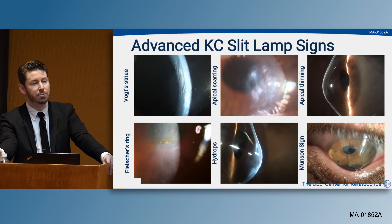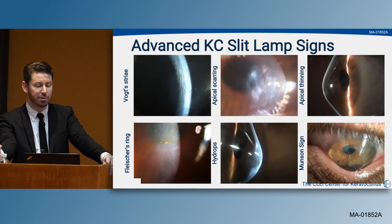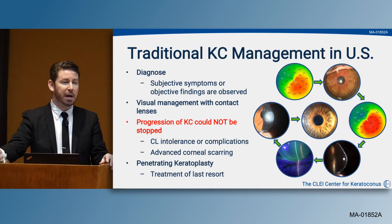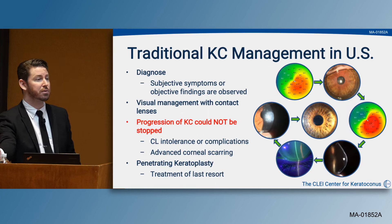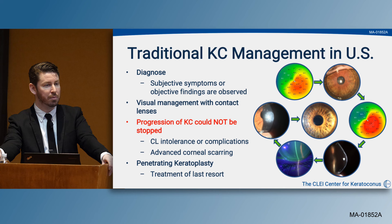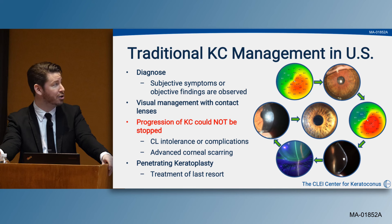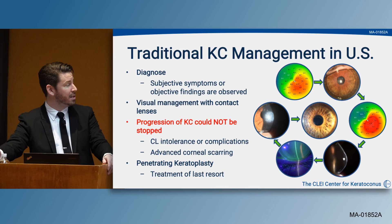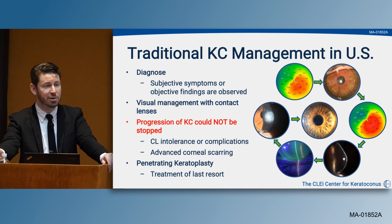We all know the advanced slit lamp signs seen with keratoconus — things like Vogt's striae, apical scarring, apical thinning, Fleischer's rings, and in situations where Descemet's tears, we end up with hydrops. The traditional management of keratoconus in the United States was to diagnose the disease when subjective or objective findings presented and then visually manage patients with corneal gas permeable lenses. Knowing we couldn't stop progression, we continuously changed the GP lens. If complications arose — advanced scarring or contact lens intolerance — we would go to the treatment of last resort: penetrating keratoplasty.